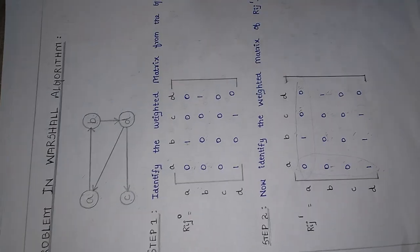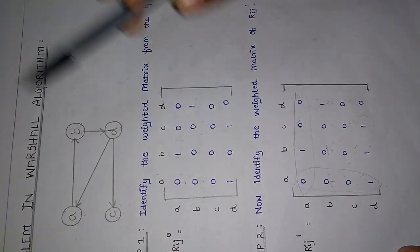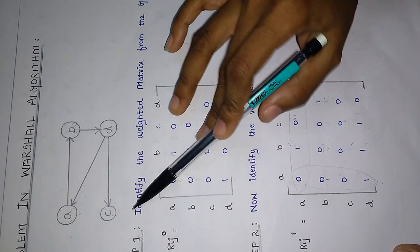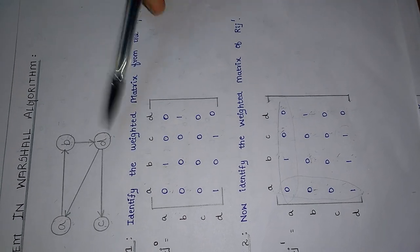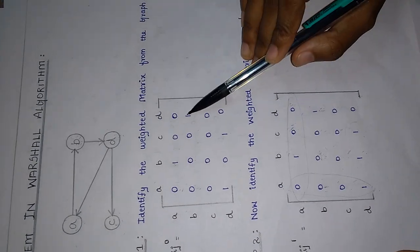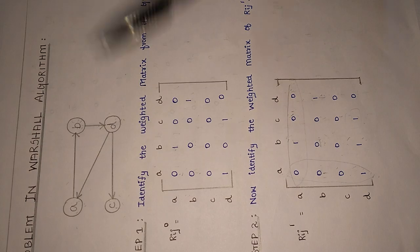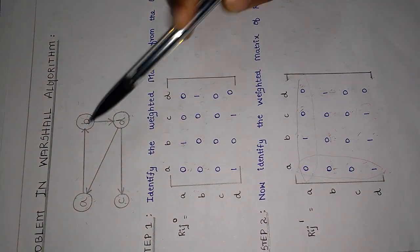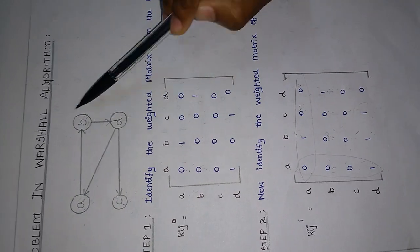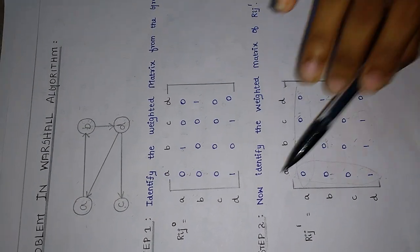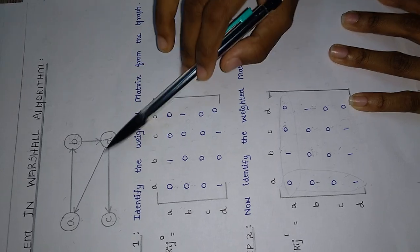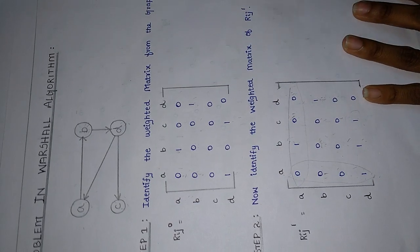Similarly for B: B to A, we have no path. B to B, we have no path. B to C, we have no path. B to D, we have a path, so we write 1. Rest of all, 0. For C: C to A, C to B, C to D, we have no path, so all 0. For D: D to A, we have a path, so 1. D to B, we have no path, so 0. D to C, we have a path, so 1. D to D, we have no path, so 0.